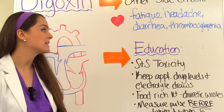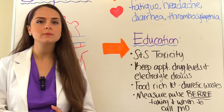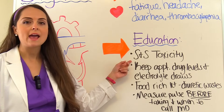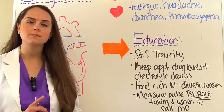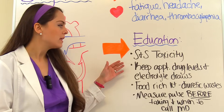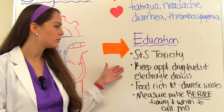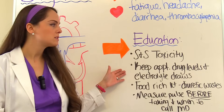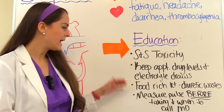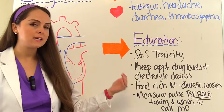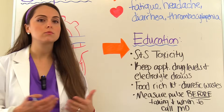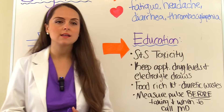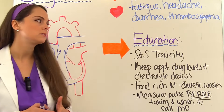For patient education, teach them to recognize signs and symptoms of toxicity — especially the early GI signs of nausea, vomiting, and anorexia. They need to keep their appointments for drug level draws and monitoring of electrolytes, liver, and renal function to ensure they're not developing toxicity. If they're on potassium-wasting diuretics, emphasize consuming potassium-rich foods like potatoes, tomatoes, oranges, avocados, spinach, and bananas to keep that level up — because hypokalemia can cause digoxin toxicity.